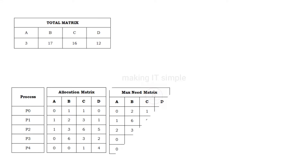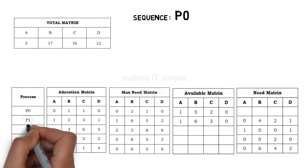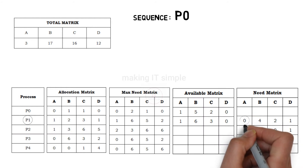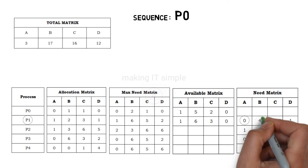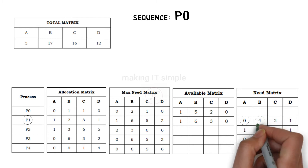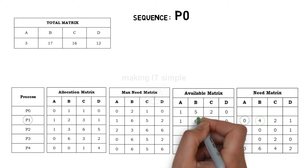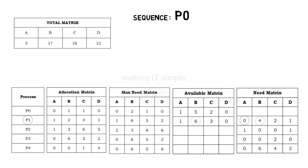Let us move forward. We will check whether we can fulfill process P1's need. P1 doesn't need resource A. P1 needs 4 instances of resource B, and we have 6 instances free, so we can fulfill this need.